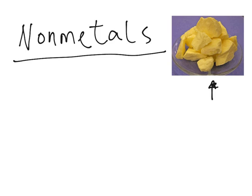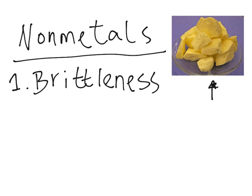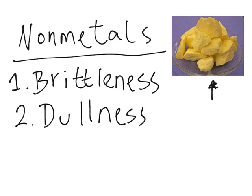A very unique characteristic of non-metals is that they're brittle, meaning they can break easily. As you can see in the picture, it doesn't look particularly strong — you can pull it apart. Another property of non-metals is dullness, which is the opposite of luster — the absence of luster. It won't reflect light, it's not shiny at all.